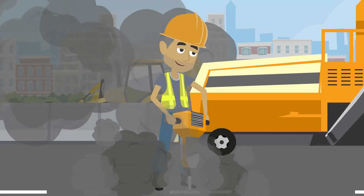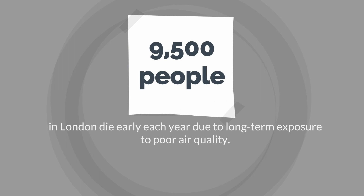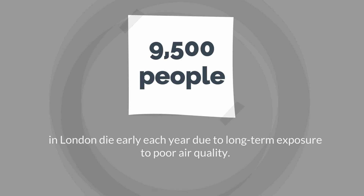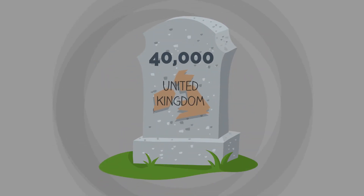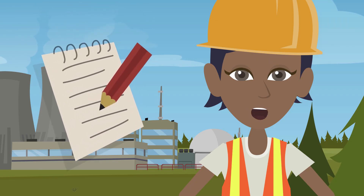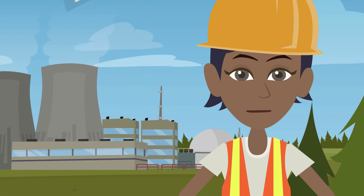For example, in a recent study commissioned by the Greater London Authority, researchers from King's College estimated that nearly 9,500 people die early each year in London from long-term exposure to air pollution. Across the UK this number is estimated to be nearer 40,000. As a result, regulations are getting tighter on the machines and activities which cause air pollution.